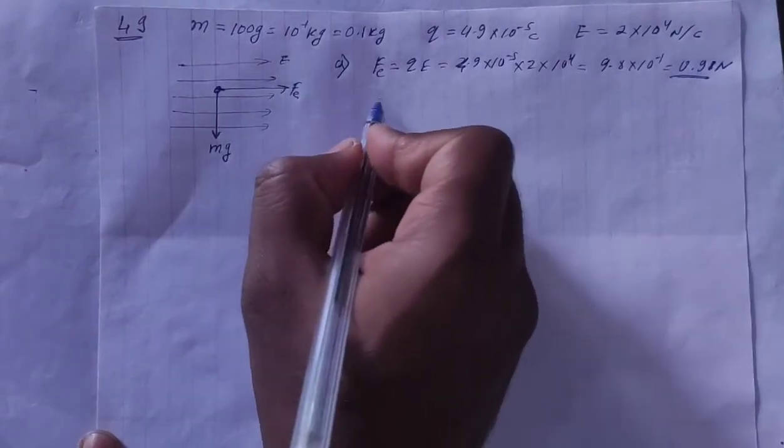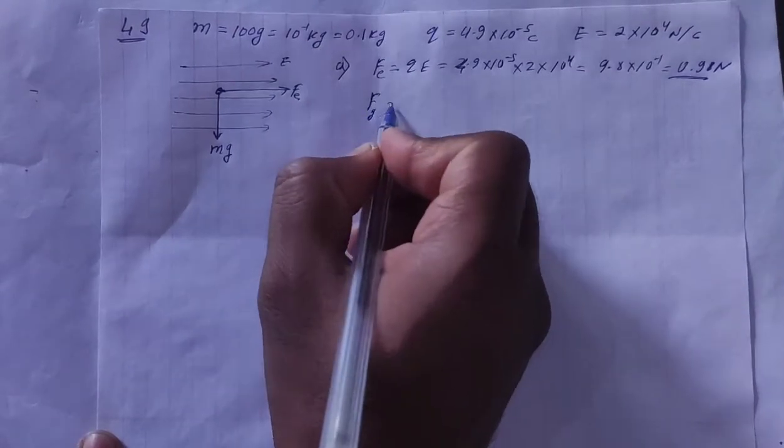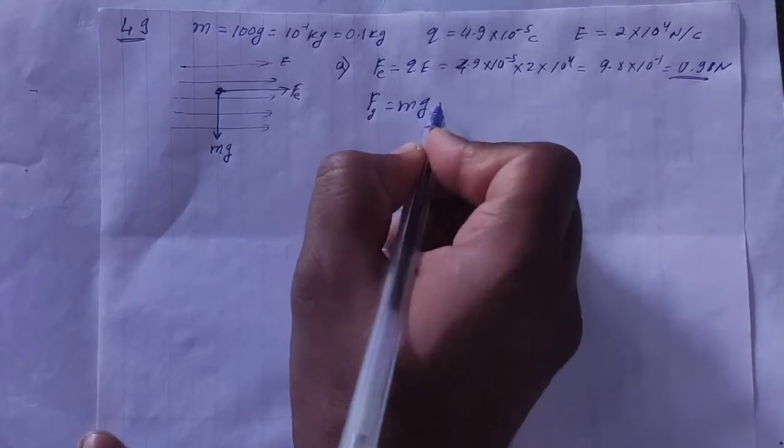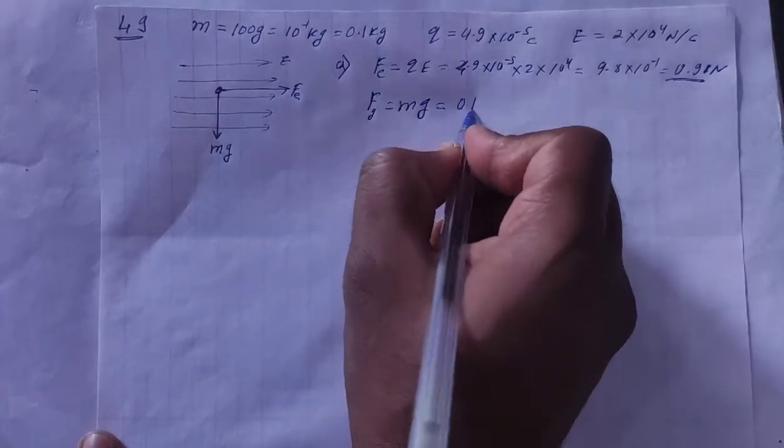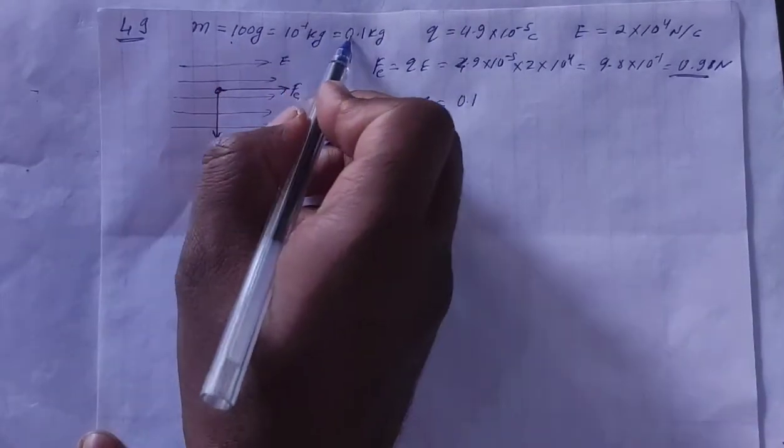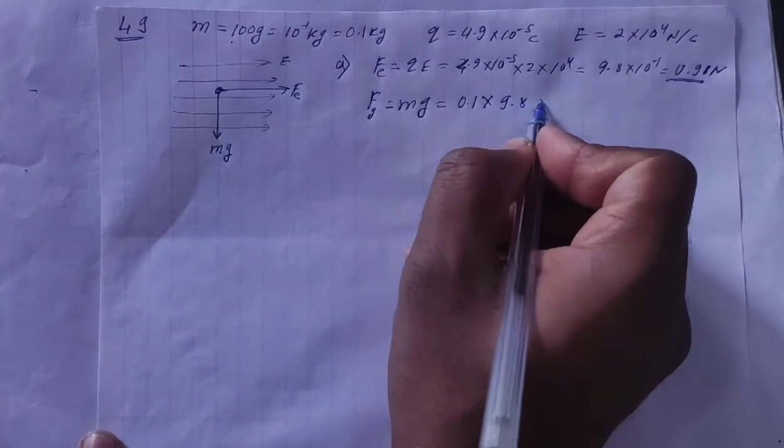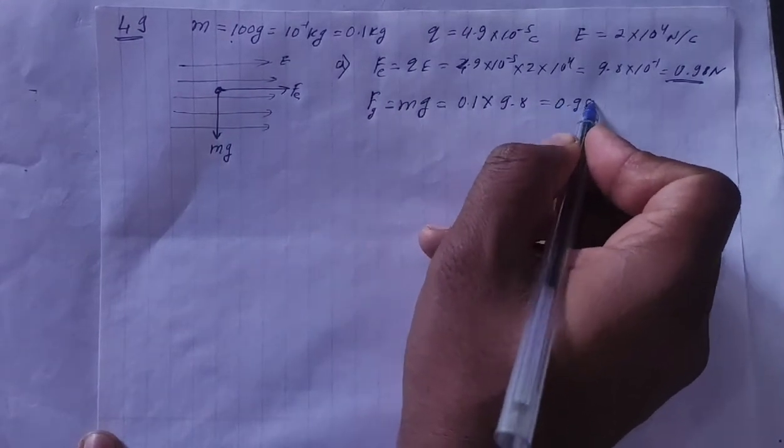Next, the gravitational force is Fg is equal to mg. M, how much is it? 0.1 kg. This is 100 gram. I have written in kilogram. 0.1 kg. And G is 9.8. This is 9.8 N.